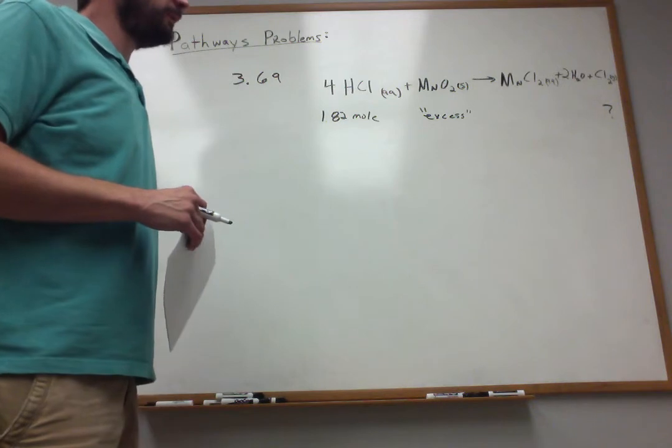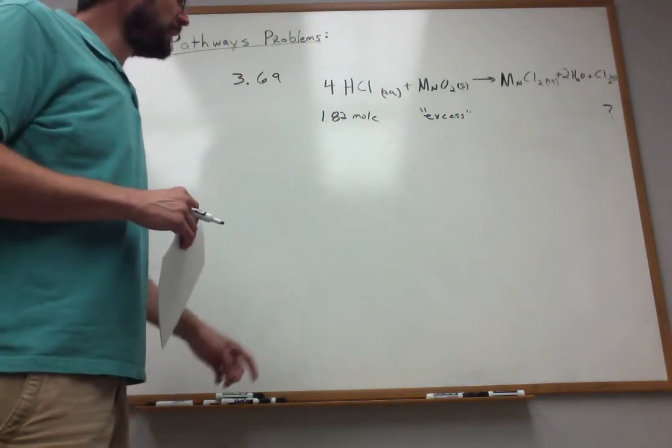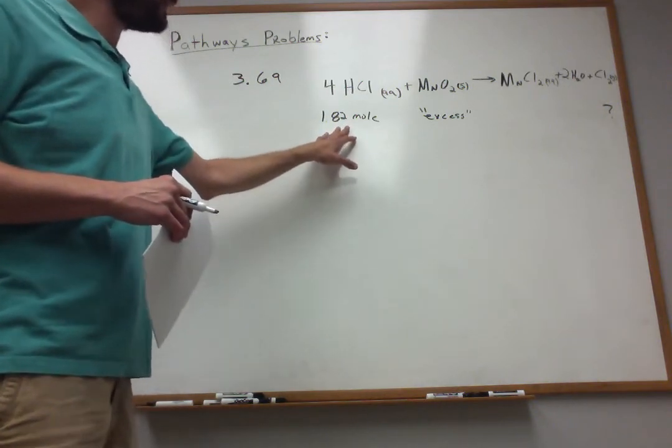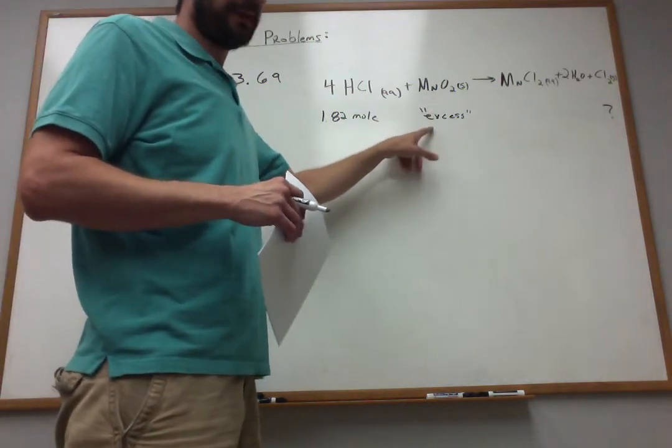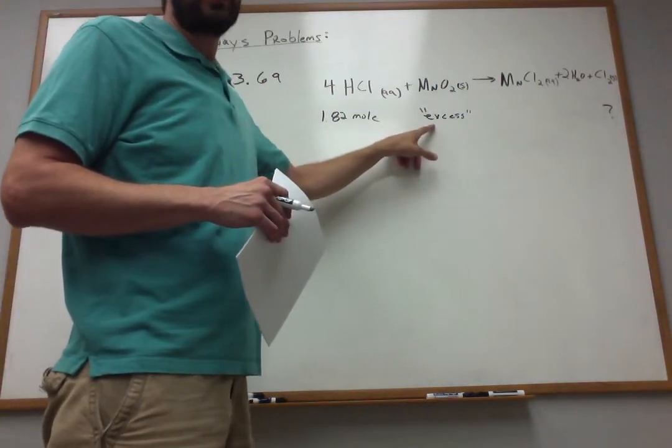It presumes it goes to the right as far as possible. And we're told that we have 1.82 moles of this and we have excess of the manganese dioxide. And that's crucial information.